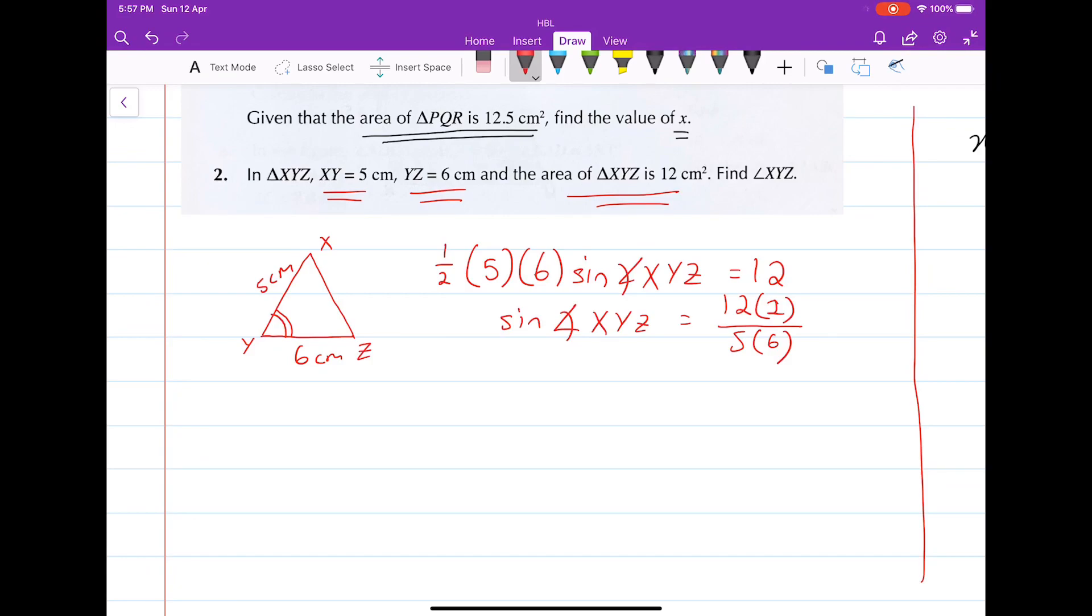Sine angle XYZ is given by 12, multiply that by 2 from the half on the other side, then divide by 5 times 6.